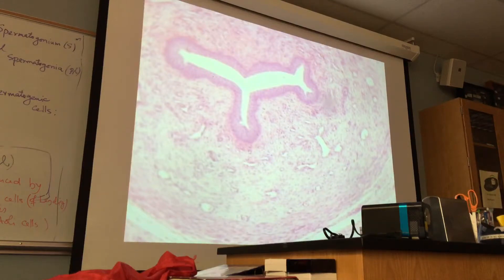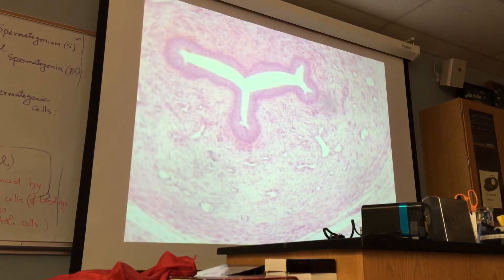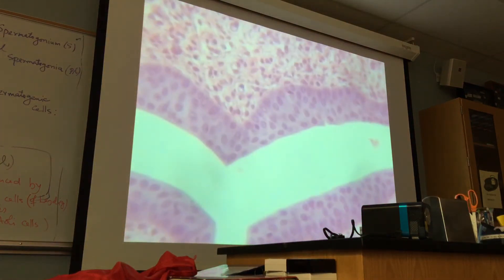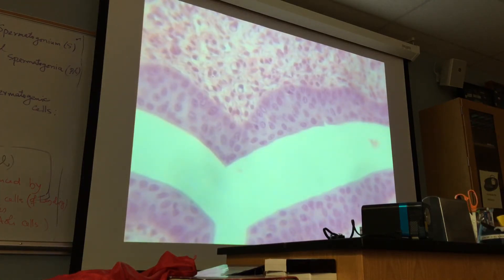The penis is stratified columnar and also stratified cuboidal and columnar. It's very difficult to differentiate. Here it seems that it's stratified columnar — these are tall cells. Can you see them in many layers? Yeah, but up to one straight layer and another straight layer like that.